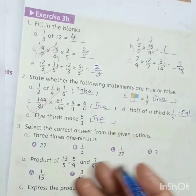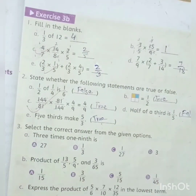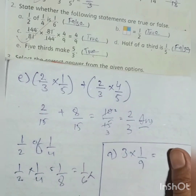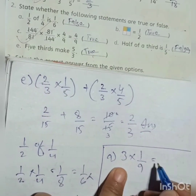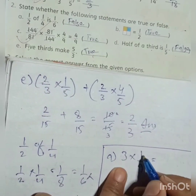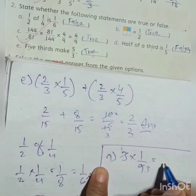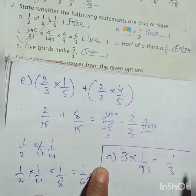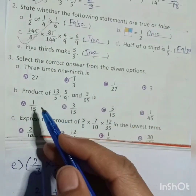Question number 3: select the correct answer from the given options. Three times one-ninth is — so 3 × 1/9: numerator 3 goes into 3 once, and denominator is 9. So the answer is 1/3, which is option number 2.